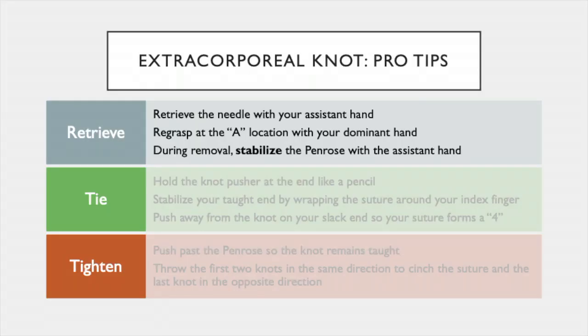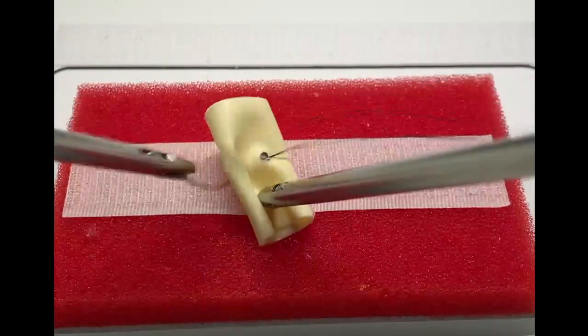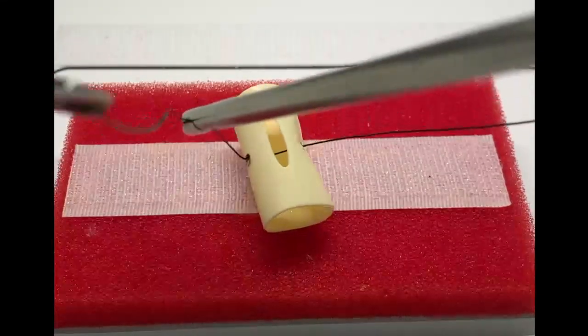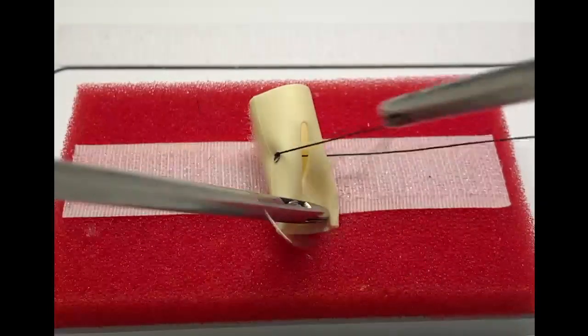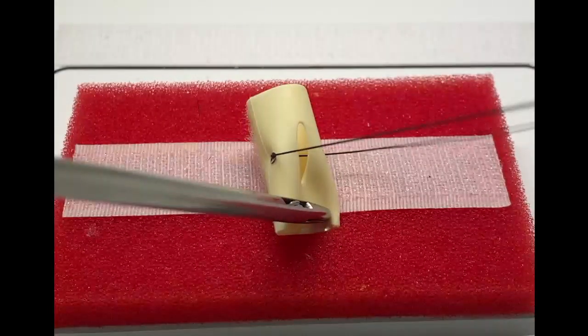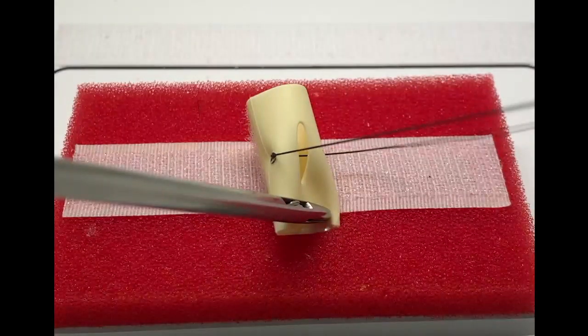The next tip is retrieval. Retrieve the needle with your assistant hand and pull 3 centimeters while stabilizing the penrose. Re-grasp at the A location, stabilize the penrose, and pull the suture through the port. Stabilizing the drain prevents avulsion and task failure.